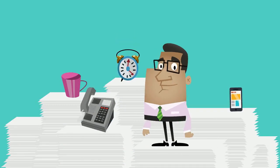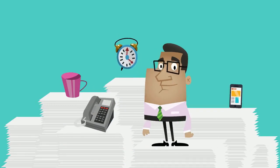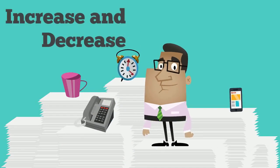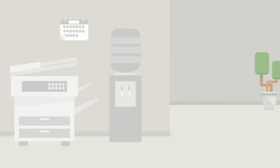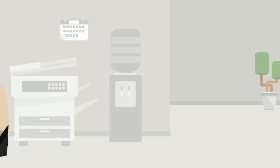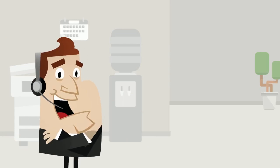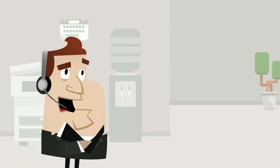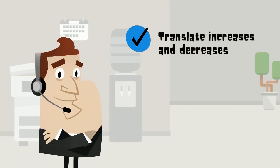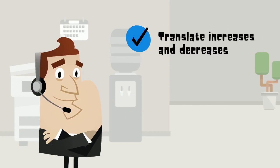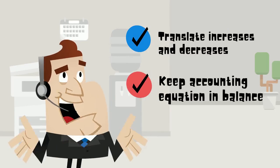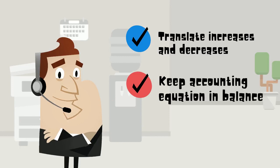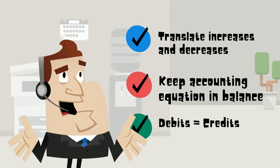But we don't record transactions by using increases and decreases. We use something called debits and credits. Debits and credits are how we translate increases and decreases in accounts. They also help us to always keep the accounting equation in balance. All the debits in each transaction must equal all the credits.